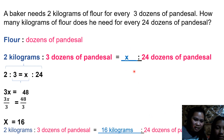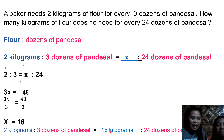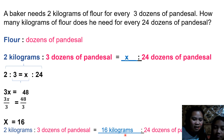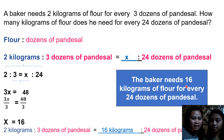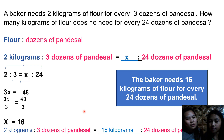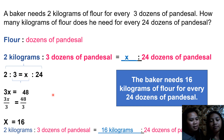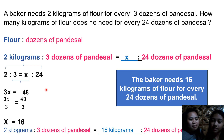The value of x is 16 kilograms of flour. So the answer to the problem is: the baker needs 16 kilograms of flour for every 24 dozens of pandesal. That is just by simply applying the ratio and proportion concept. Let us try another problem.